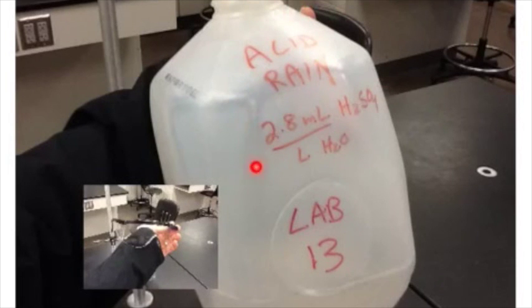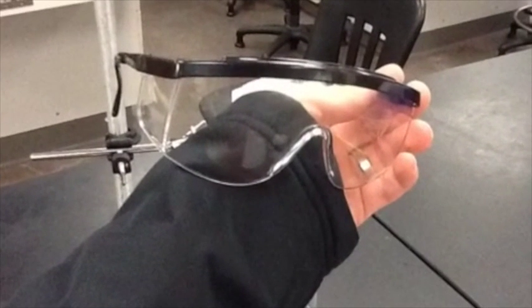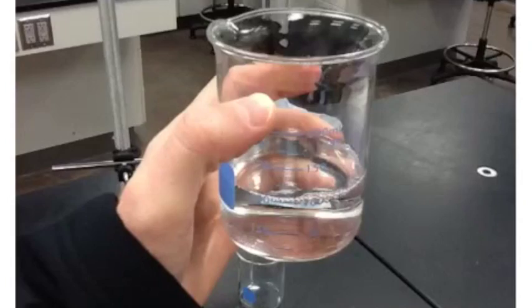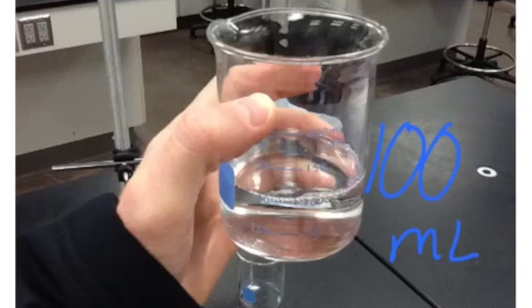Find the acid rain container. And please make sure to put on some goggles for this experiment. Pour 100 milliliters of acid rain into a 250 milliliter beaker.